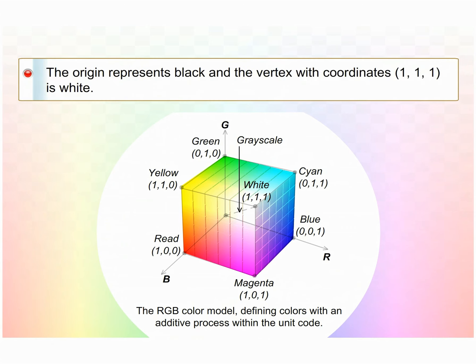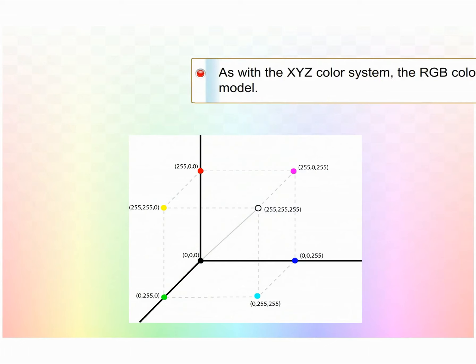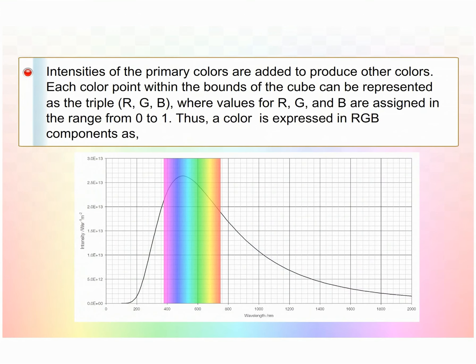In the RGB cube, the origin represents black and the vertex with coordinates (1, 1, 1) is white. The vertices of the cube on the axes represent the primary colors, and the remaining vertices represent the complementary color for each primary. The RGB color scheme is an additive model — intensities of the primary colors are added to produce other colors. Each color point within the bounds of the cube can be represented as a triple (R, G, B) where values are assigned in the range from 0 to 1.